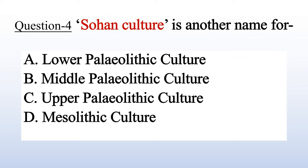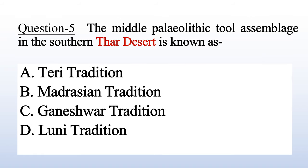Answer is A: Lower Palaeolithic culture. Question 9: The Middle Palaeolithic tool assemblage in the southern Thar desert is known as — A. Terry tradition, B. Madrasian tradition, C. Ganesha tradition, D. Luni tradition. Answer is D: Luni tradition.